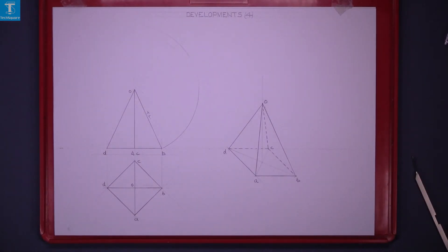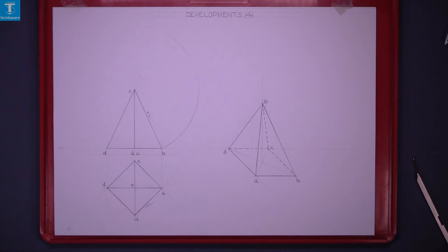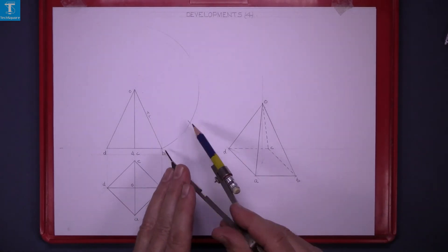Now we need to step off the distances at the base. This line is a true length line because it's on the ground and we're looking perpendicular down to it. So we can take that length and mark it off four times on the arc.